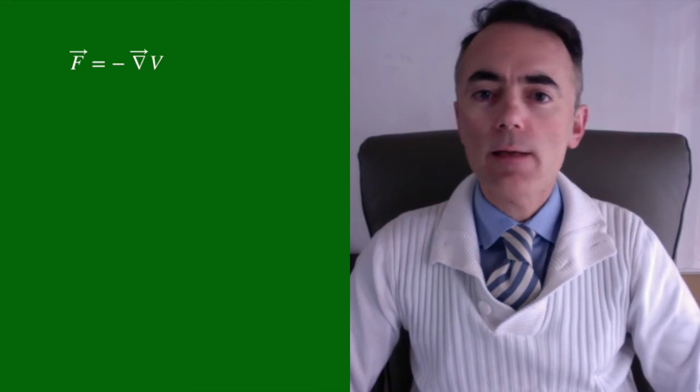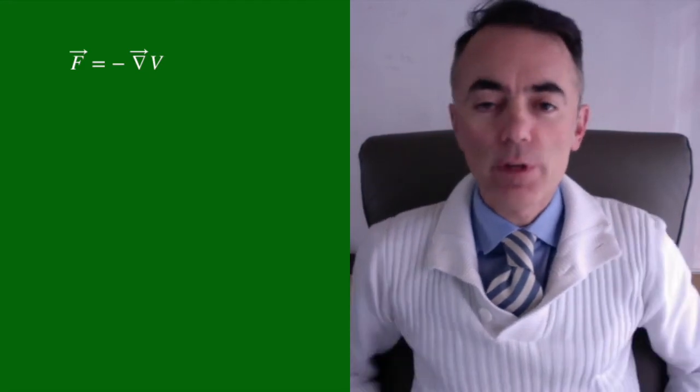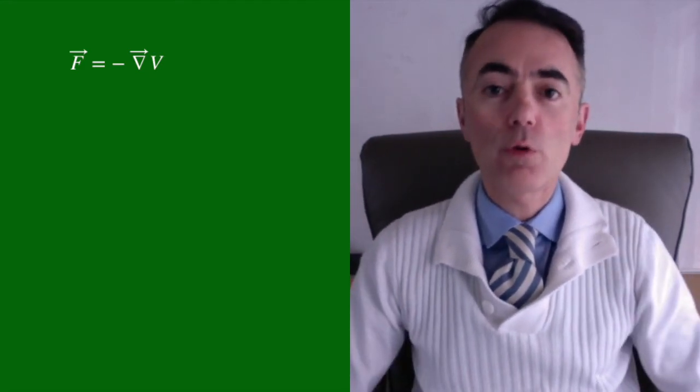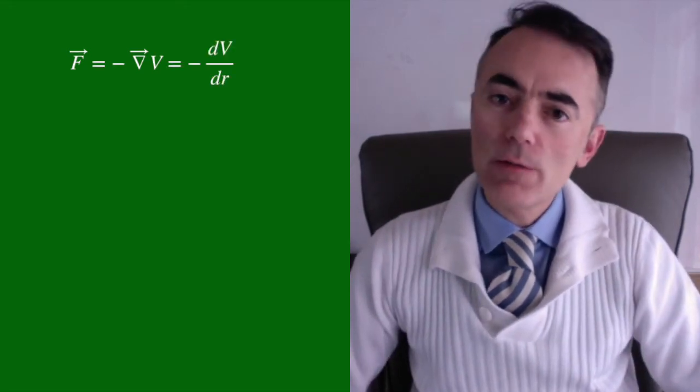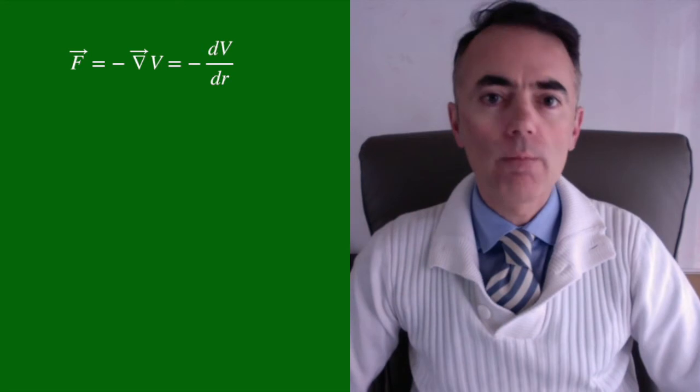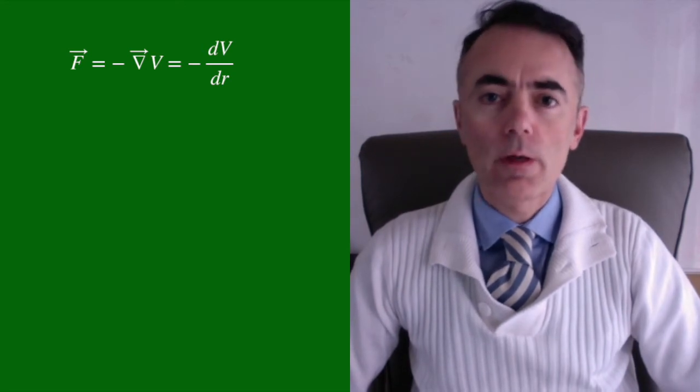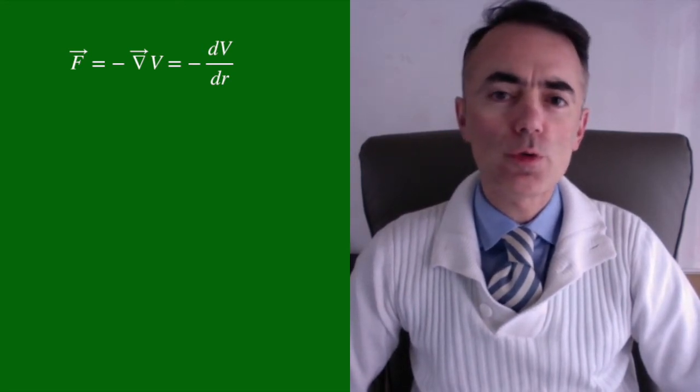From our old friend the relationship between the force and the potential, we can write the force as minus the gradient of V, being V the potential associated to that force. But in spherical coordinates this is negative the derivative of V with respect to r in the radial direction. Here we consider the source of the force to be at the origin.